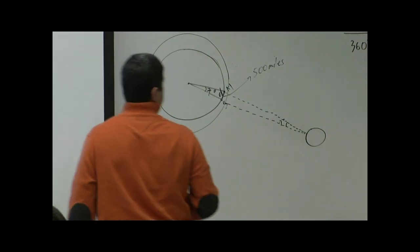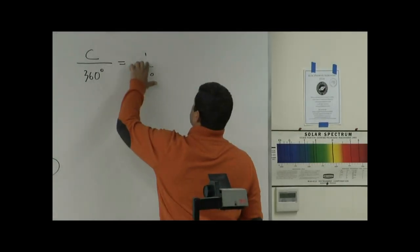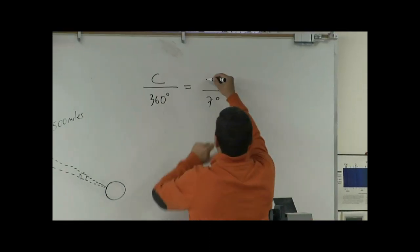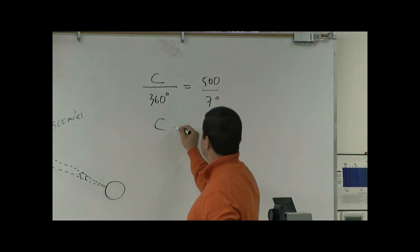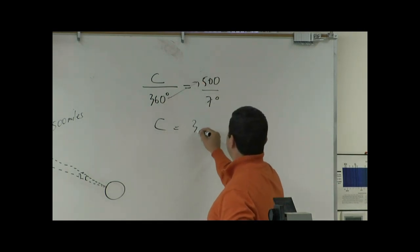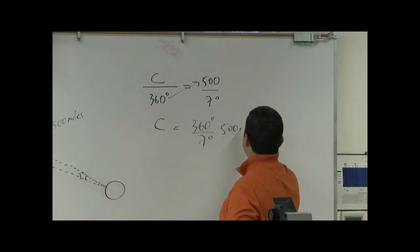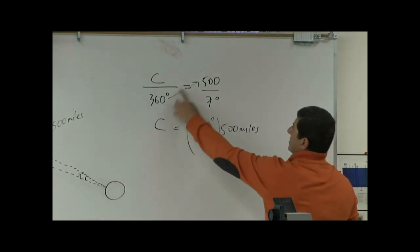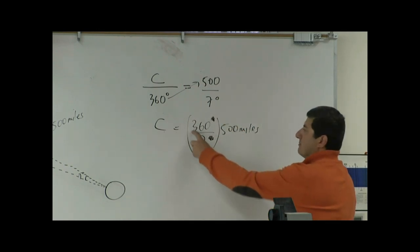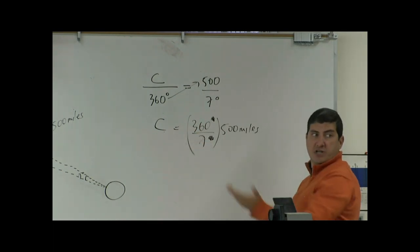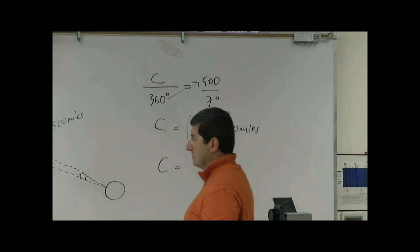Therefore, since the distance between the two cities was approximately 500 miles, what would he have gotten for the circumference of the Earth? This is a ratio, right? This one goes over there. So you do 360 degrees divided by seven degrees. The degree and the degree cancel. So this becomes unitless, no units. No units times 500 miles, we're going to get an answer in miles.